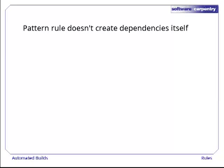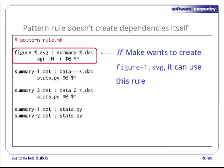The reason is that pattern rules don't create dependencies. They just tell MAKE what to do if there's a dependency. In other words, if MAKE decides it wants to create figure1.svg, it can use our pattern rule. But we still have to tell MAKE to care about figure1.svg.